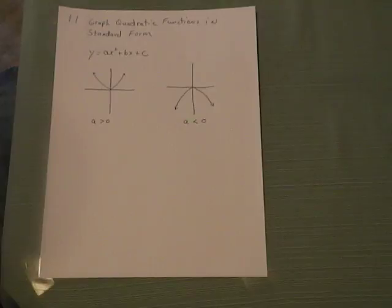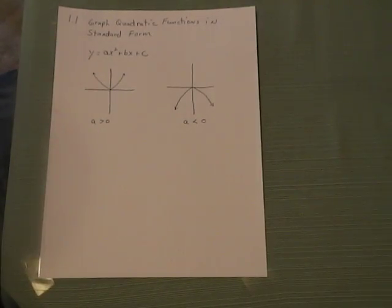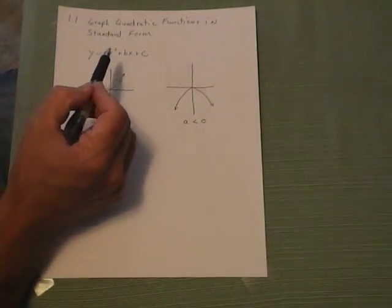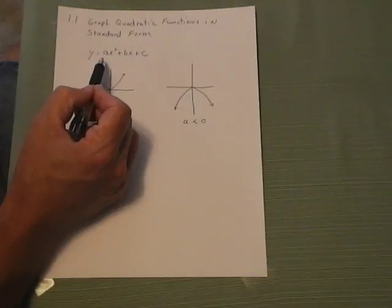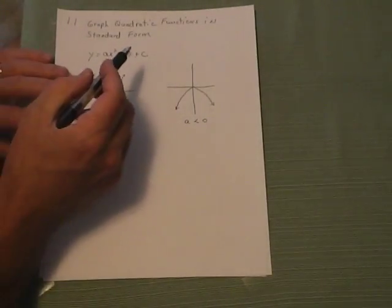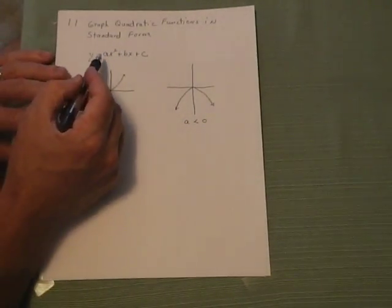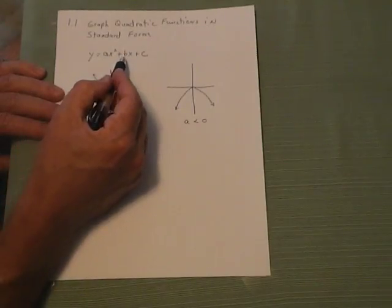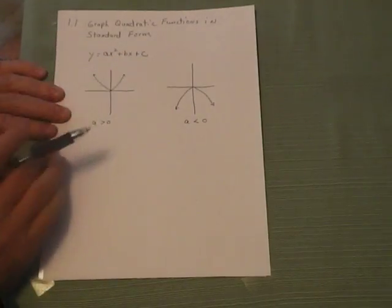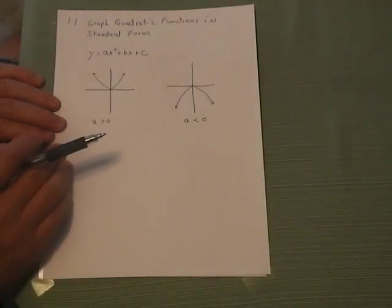Today's lesson is Lesson 1.1: Graph Quadratic Functions in Standard Form. The standard form of a quadratic function is y equals ax squared plus bx plus c, where a is always the coefficient in front of the x squared, b is always in front of the x, and c is always the constant.